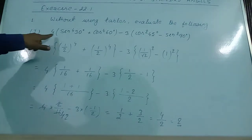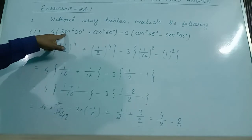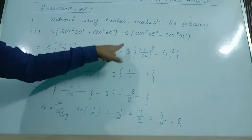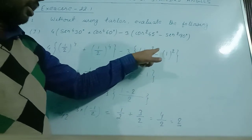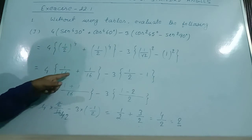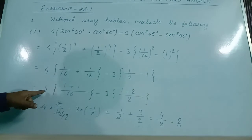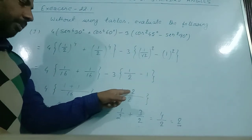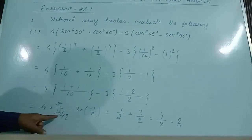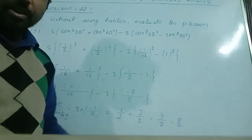Question 1j: 4 sin⁴30° + cos⁴60° − 3 cos²45° − sin²90°. Substituting: sin 30° = 1/2, cos 60° = 1/2, cos 45° = 1/√2, sin 90° = 1. Calculating: 4(1/2)⁴ + (1/2)⁴ − 3(1/√2)² − 1² = 4(1/16) + 1/16 − 3(1/2) − 1 = 1/4 + 1/16 − 3/2 − 1. Taking LCM as 16: (4 + 1 − 24 − 16)/16 = −35/16. After simplification, the answer is 2.